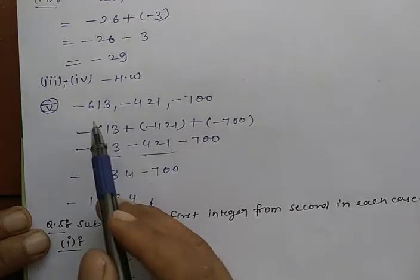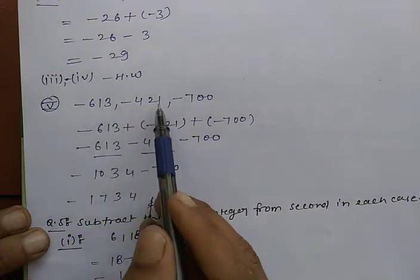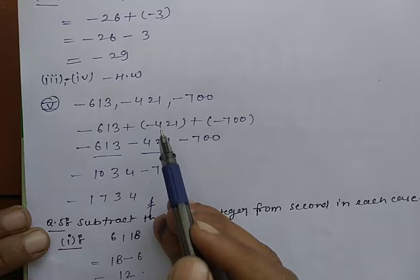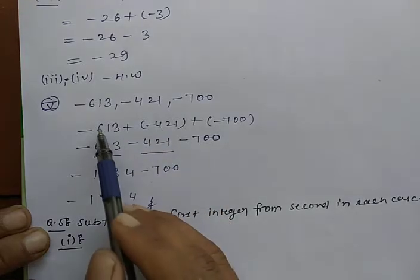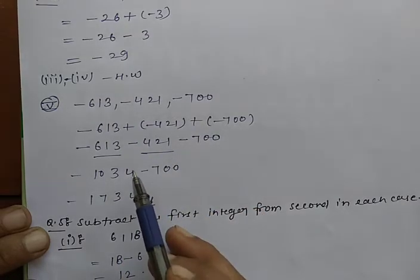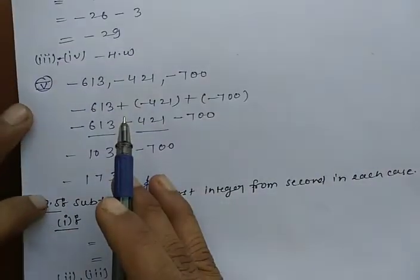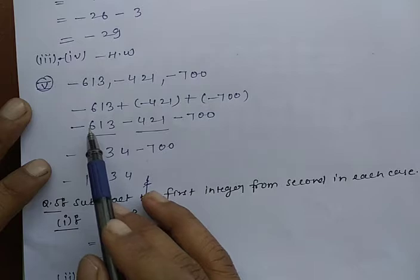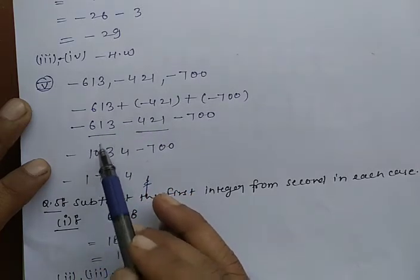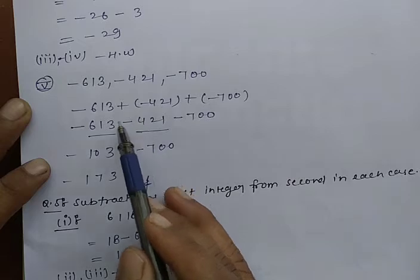Next question is minus 613 minus 421 minus 700 - three digits. First add two digits, then add the third. Solve it: minus 613, minus 421, minus 700. Minus minus is minus minus plus.